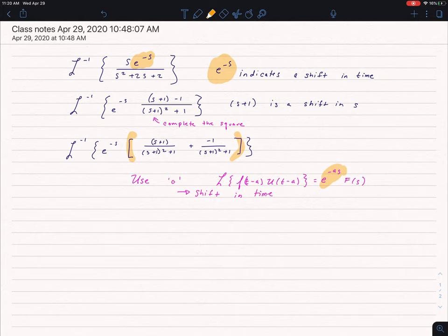So this is going to be my shift in time. So, let's rewrite this as u of t minus 1 times f of t minus 1, so that's from O.